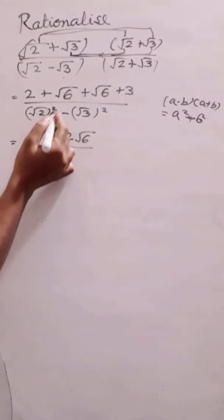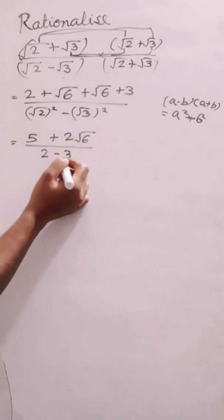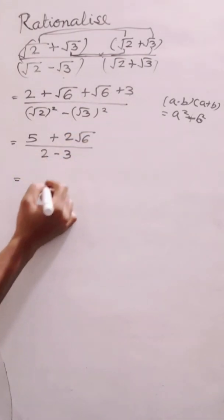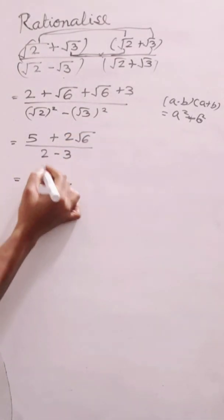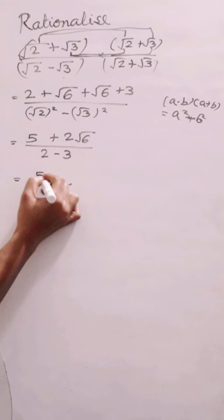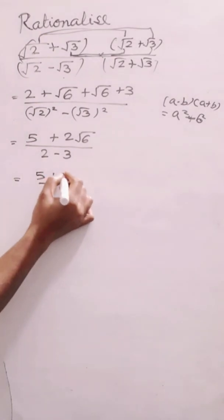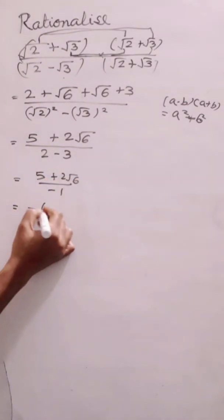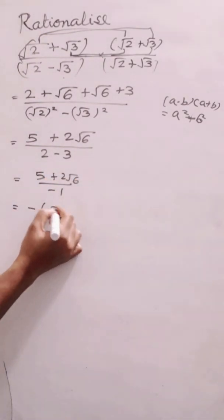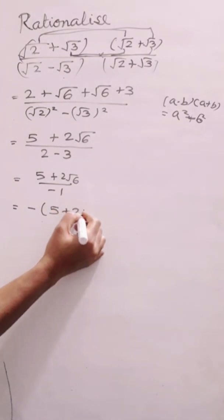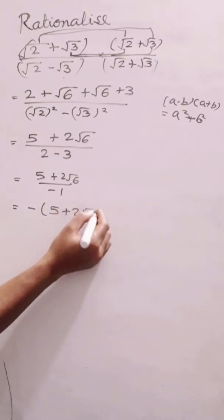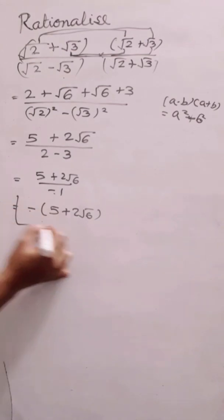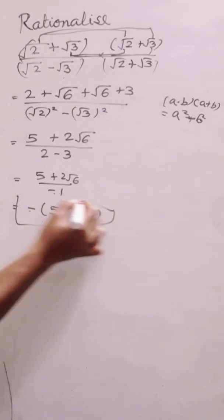Root 2 squared is 2 and root 3 squared is 3, so 2 minus 3 is minus 1. In the numerator we have 5 plus 2 root 6, and since the denominator is minus 1, the minus sign comes up. So the required answer is minus (5 + 2√6).